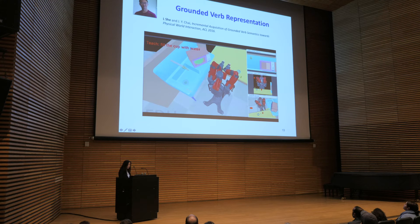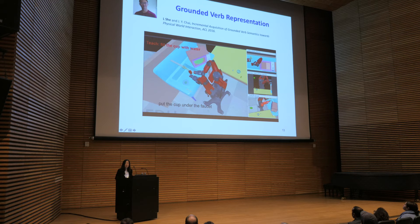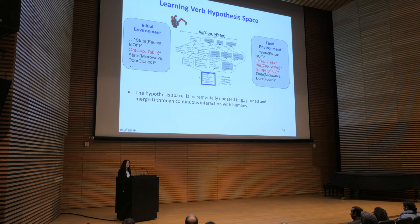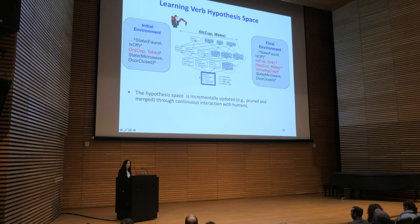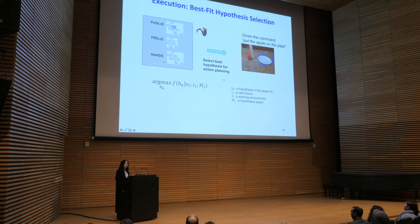We show an example from this simulated Baxter robot where we teach the robot how to fill a cup with water through step-by-step instructions. The robot can either go through these actions itself, experiencing the state change, or observe the change from watching a human perform them. Ideally, if we capture the state change and explicitly model it as part of a grounded verb representation, it can provide a link to planning. We apply classical AI approaches using a hypothesis space to represent grounded verb semantics. This hypothesis space can be incrementally updated through continuous interaction with humans. When the robot receives a new command, it searches the knowledge base of hypotheses to find the best one for planning.